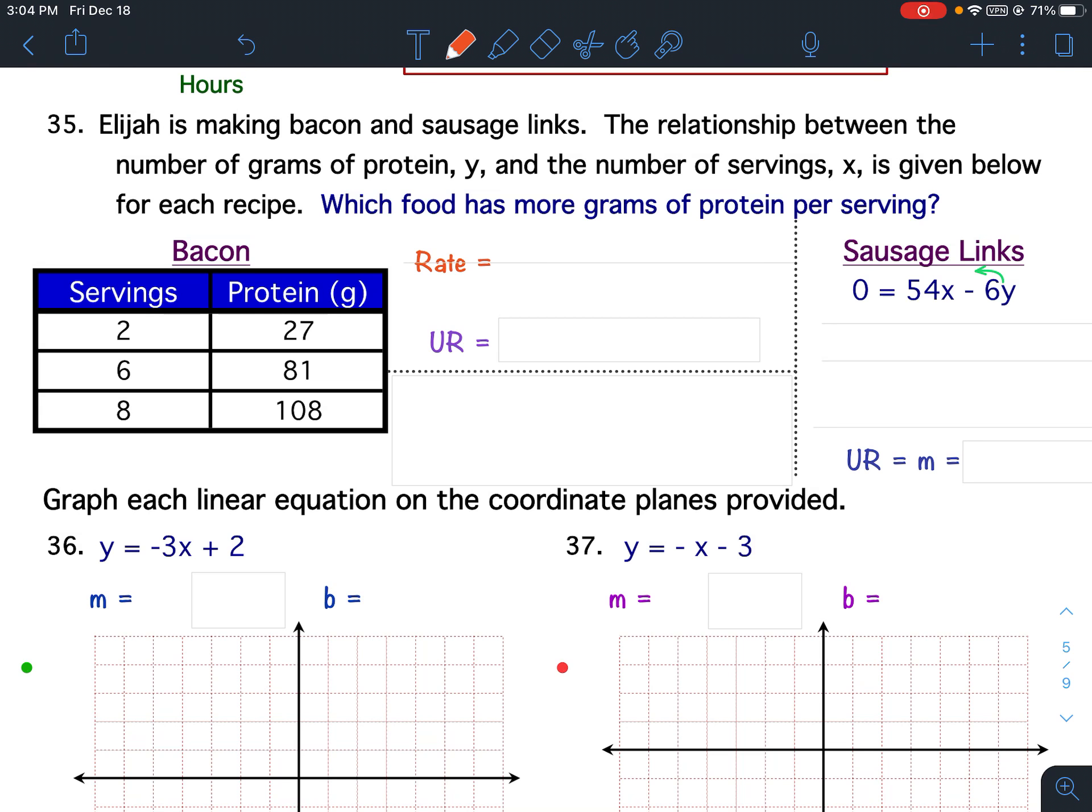Scientific Notation and Linear Equations, Lessons 4 through 7 Review. Question 35: Elijah is making bacon and sausage links. The relationship between the number of grams of protein Y and the number of servings X is given below for each recipe. Which food has more grams of protein per serving?